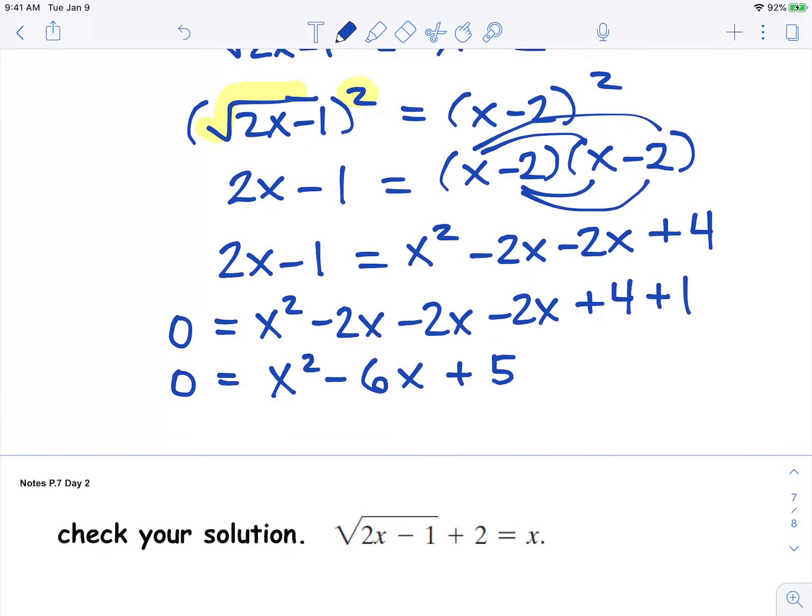Now we're going to factor it. So we're going to say what are the factors of 5 that add to negative 6? And they are negative 5 and negative 1.